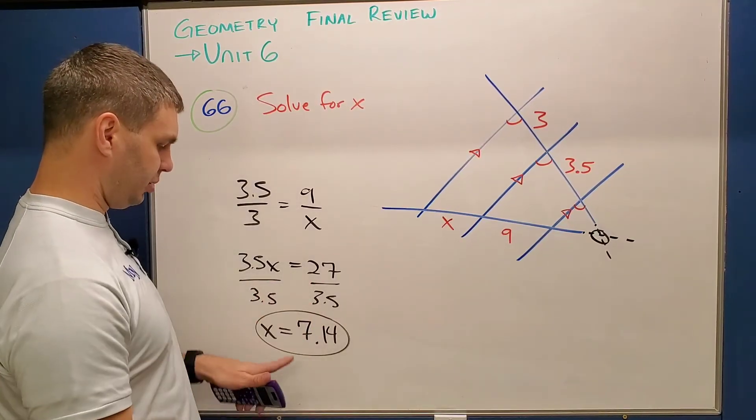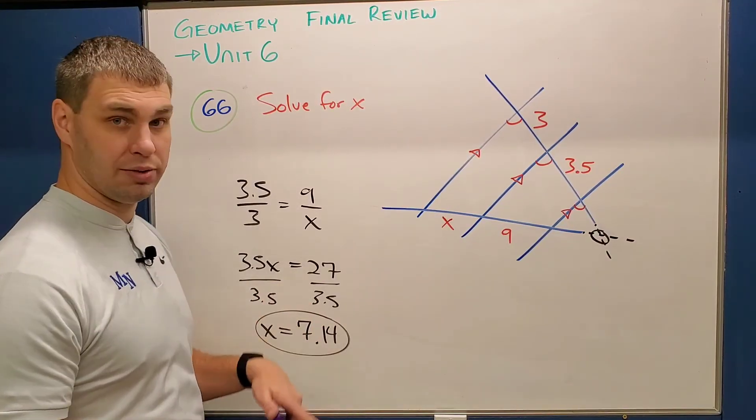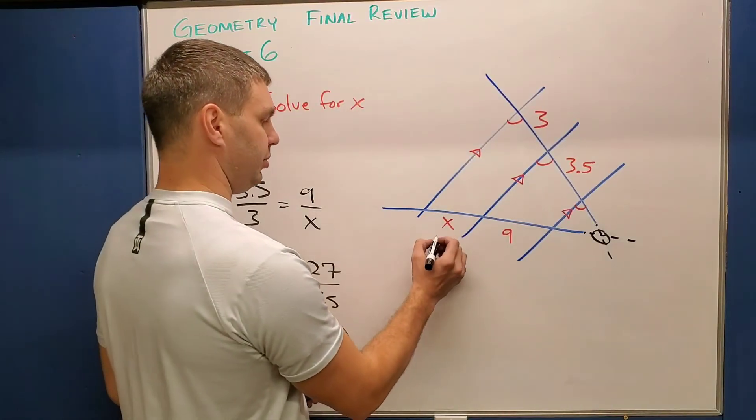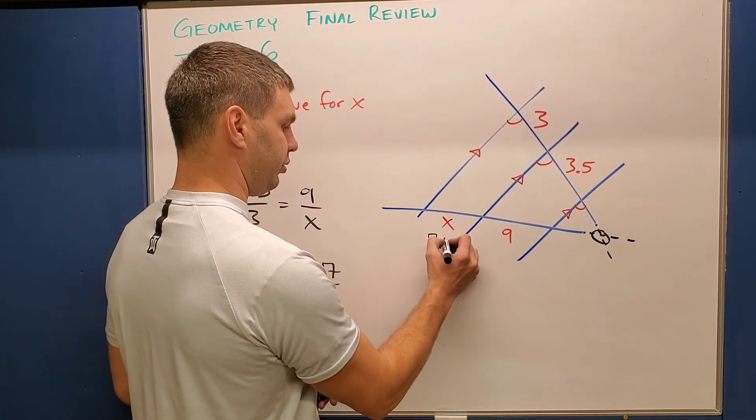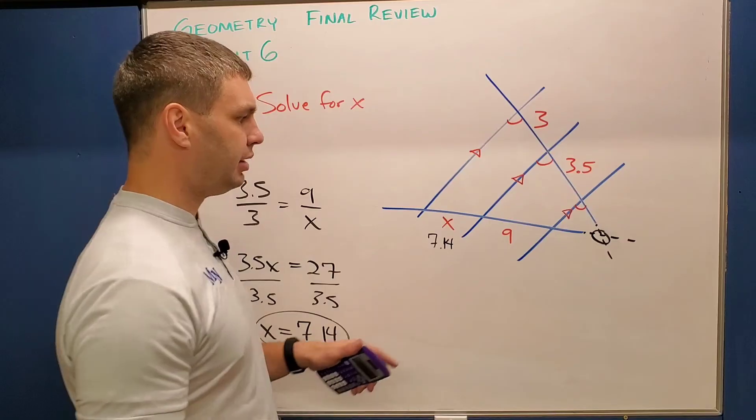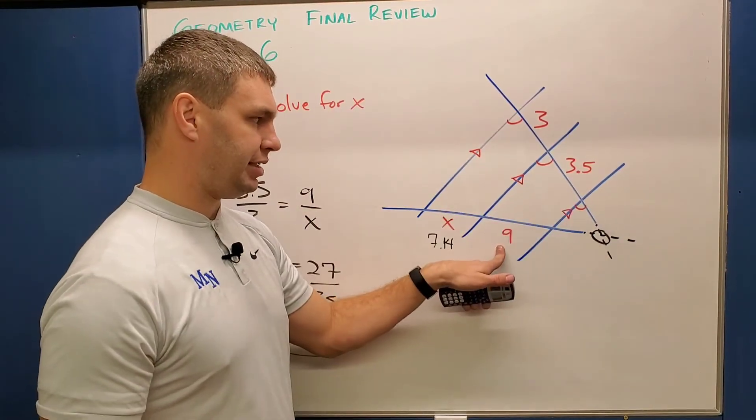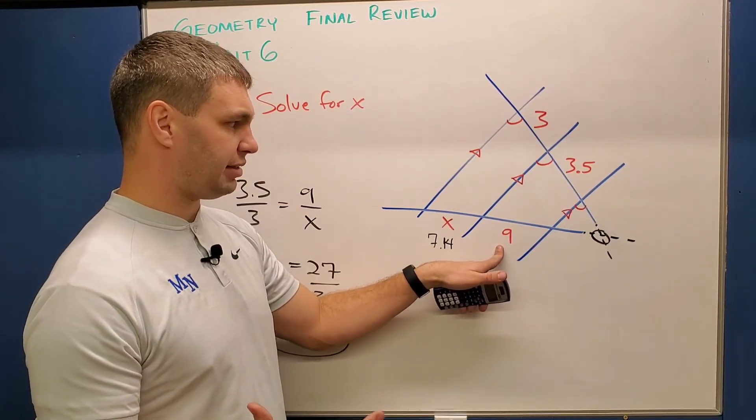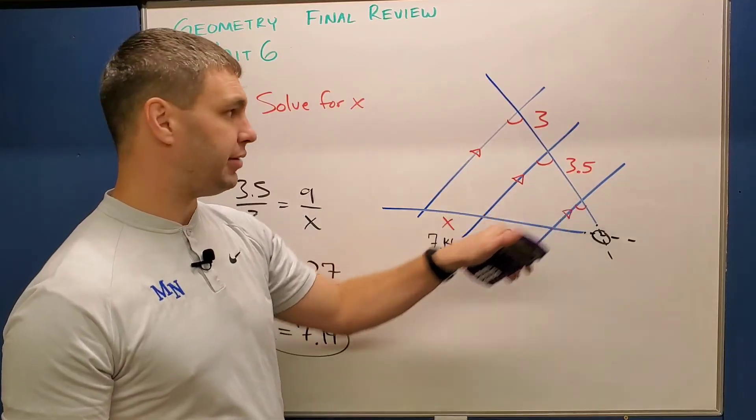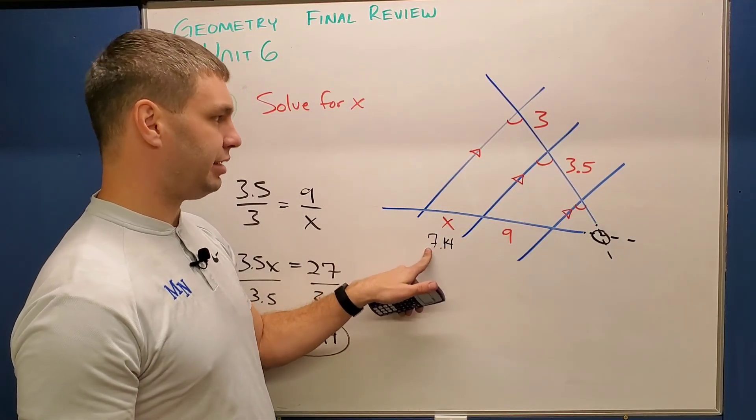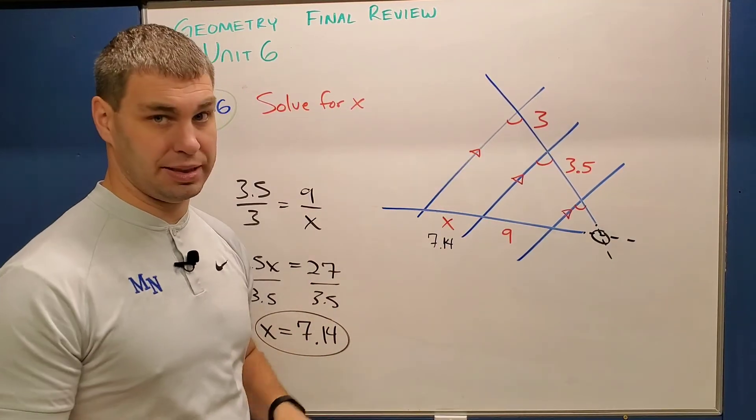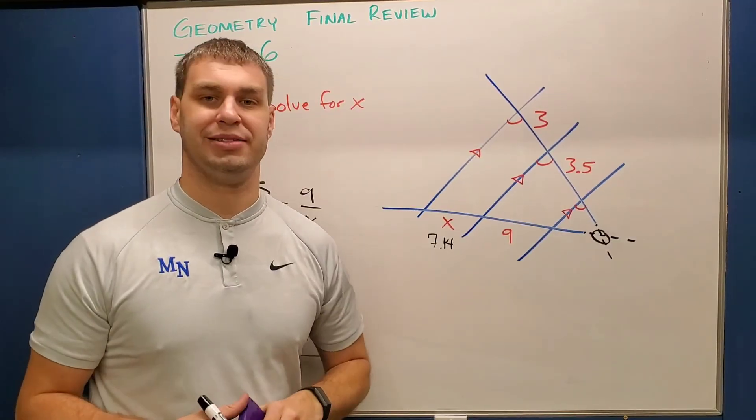After solving for x, it kind of gives me a long decimal, but I'm just rounding a little bit to 7.14. Again, let me put it back into my problem. 7.14. Let's see if this makes sense. Well, if I look at these two, 9 is about a little bit less than three times as big as 3.5. 7.4, again, a little bit less than three times as big as 3. So this definitely makes sense.